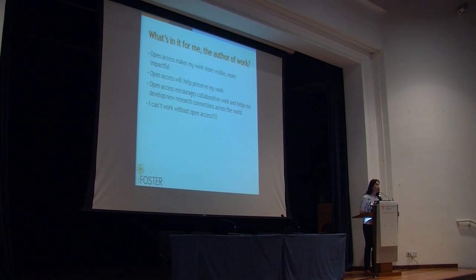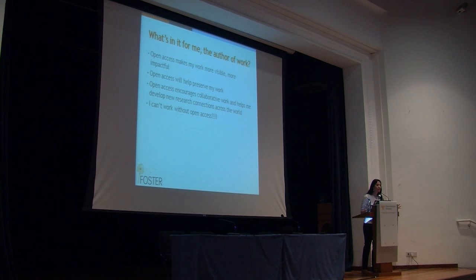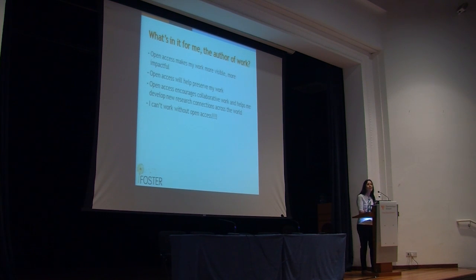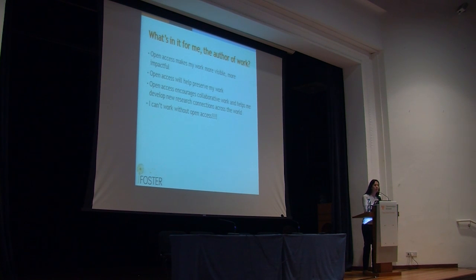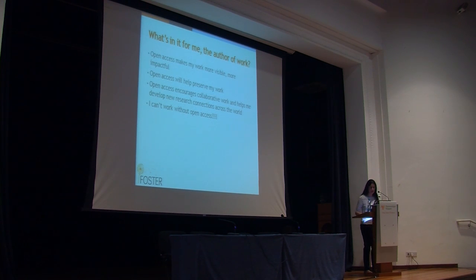At the point we've reached, there are some researchers who cannot work without open access — either because their country cannot pay, but also because they do such intensive machine research and semantic work that they really rely on it. For example, those researchers who use machines and use research data — open data — to test algorithms: if this data is not there, they cannot do their work. Progress is such that open access is actually necessary for some researchers.